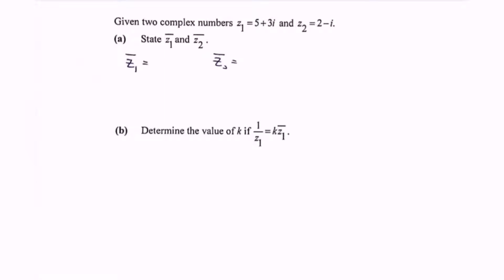Hello everyone, welcome to my channel. In this video, I'm going to discuss an example for complex numbers. Given the two complex numbers, where z sub 1 is equals to 5 plus 3i, and z sub 2 is equals to 2 minus i.